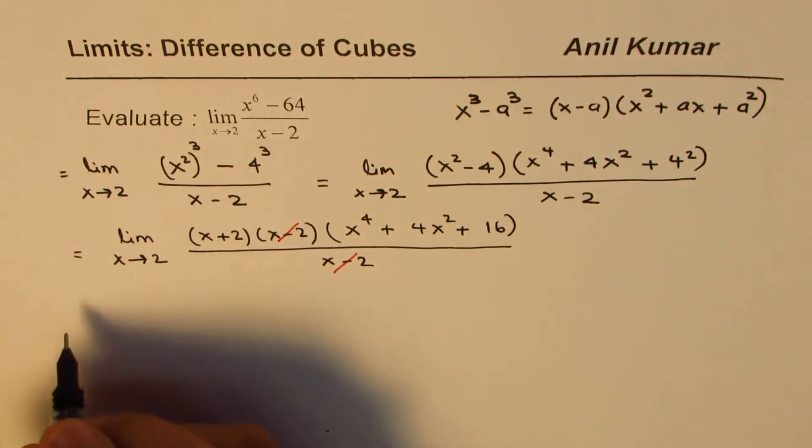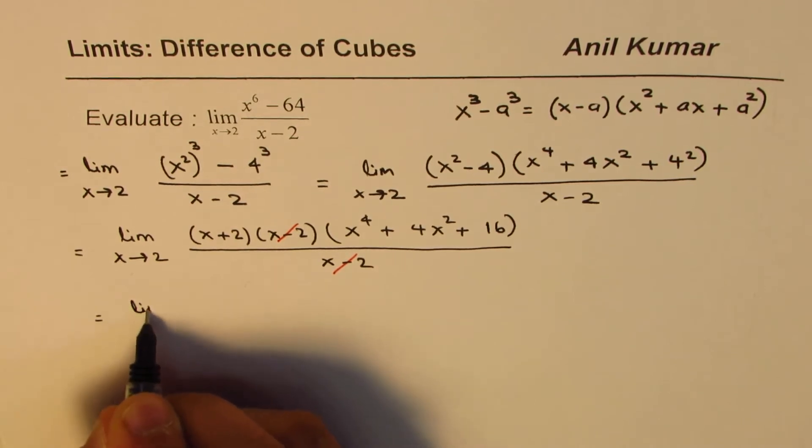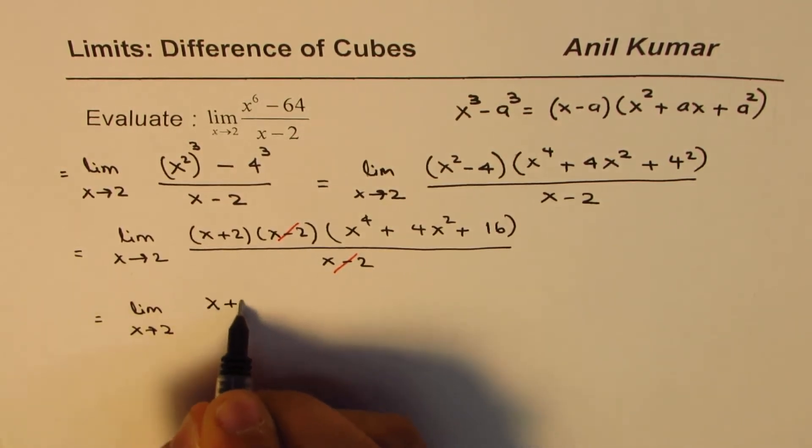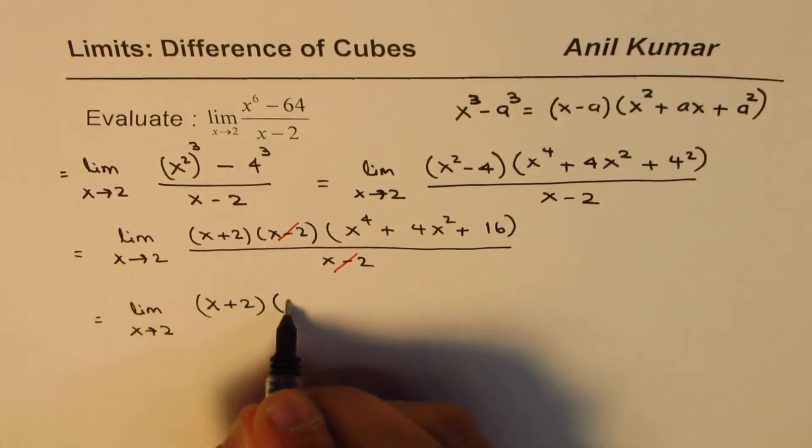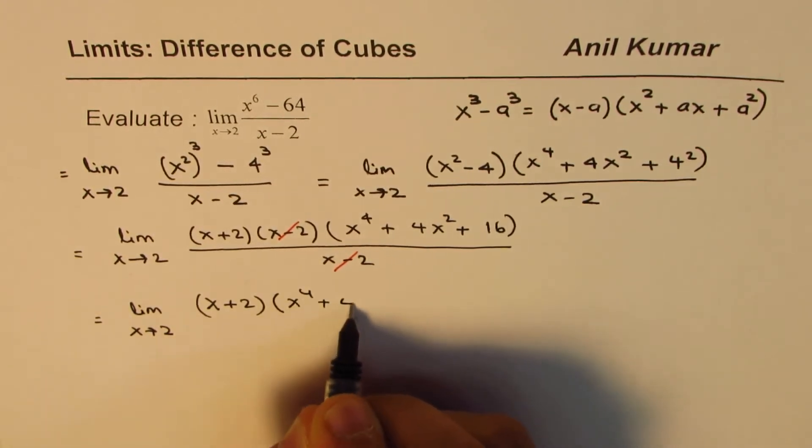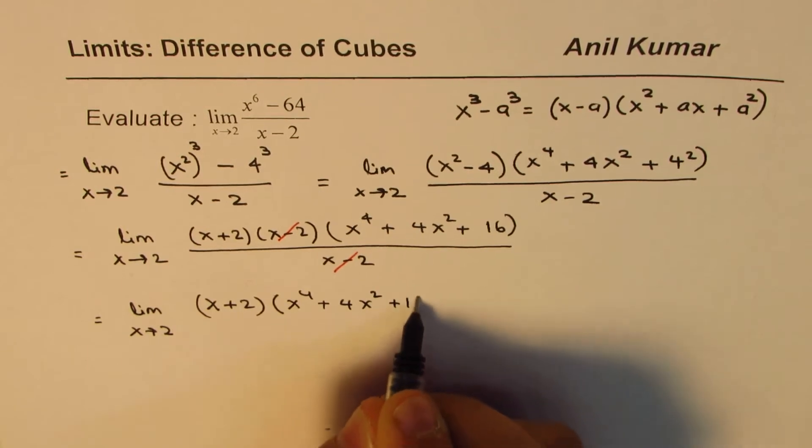Now x minus 2 and x minus 2 cancel off. So what we get here is limit x approaches 2, in the numerator, we have x plus 2 times x to the power of 4 plus 4x square plus 16.